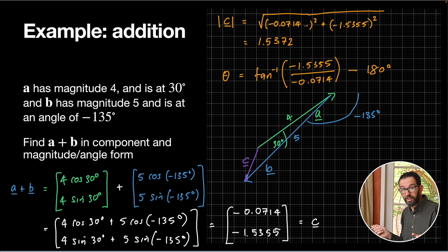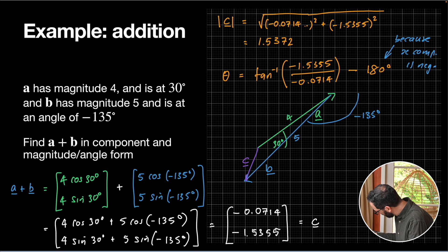So I'll type this into the calculator. So remember, this was because if the x component had been positive, you would have left off the 180 degree bit. So shift tan for inverse tan. Open a bracket. 1.5355 divide. I've canceled off the negative signs in my head. Divided by 0.0714. And it gives me an angle. Minus 180. Gives me an angle of negative 92.7 degrees.